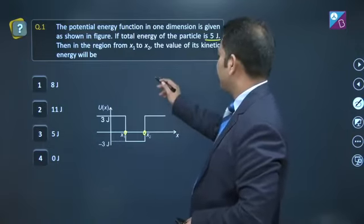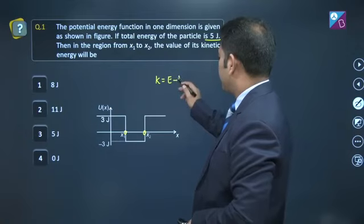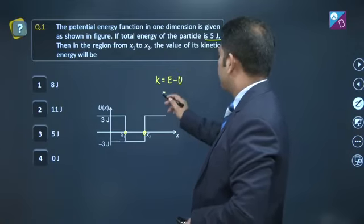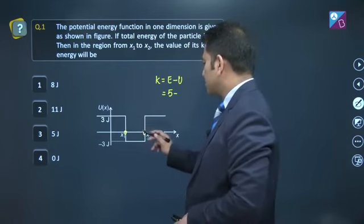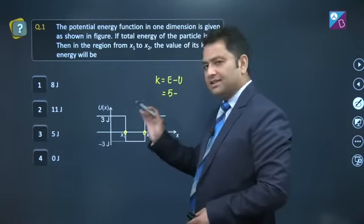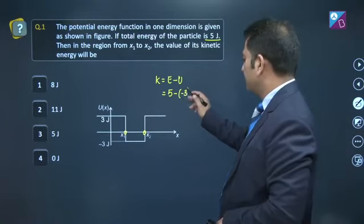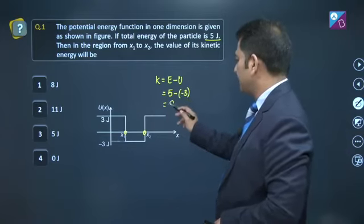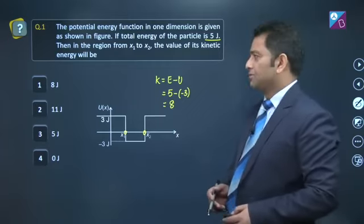It's straightforward. Kinetic energy equals mechanical energy minus potential energy. Mechanical energy is 5 joule, and between x1 to x2, potential energy is minus 3 joule. So kinetic energy will be plus 8 joule and that is present in option number 1.